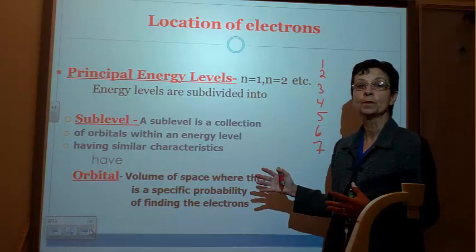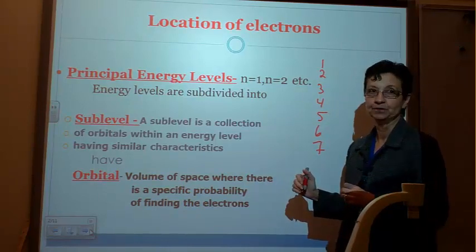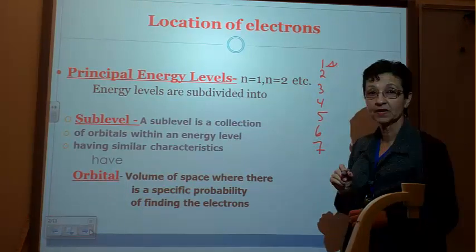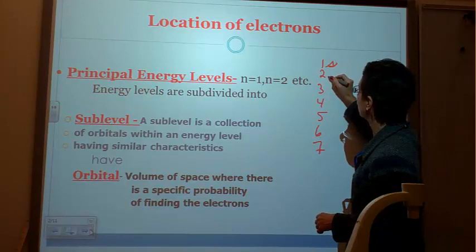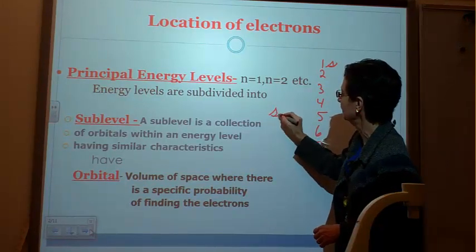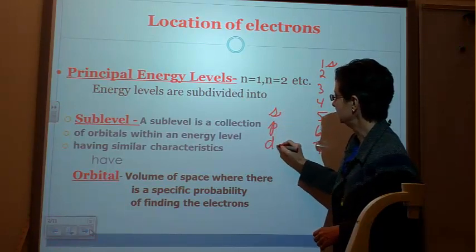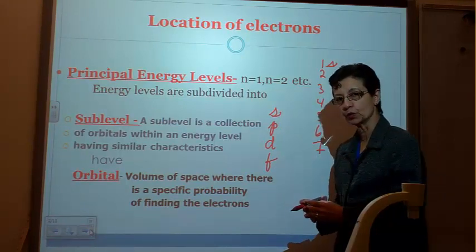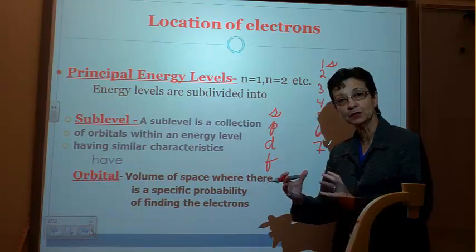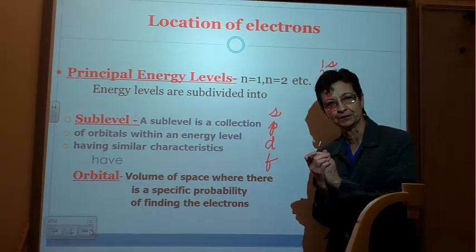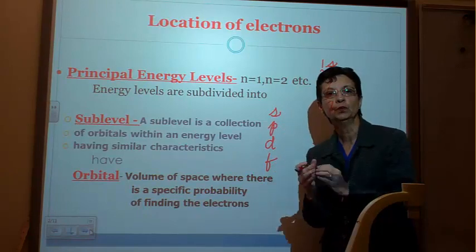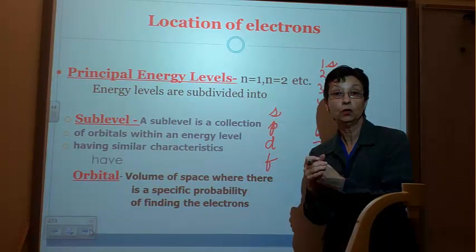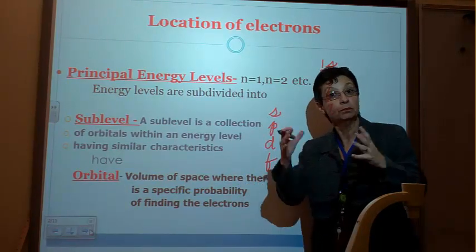The sublevel is a collection of orbitals within an energy level. There's a collection of orbitals called the S orbital, P orbital, D, and F. Then there are individual orbitals, and the individual orbital is that volume of space where two electrons can live. You can picture it like a room or a dorm where two people can live, or there could be one student or no students at all. That's possible too, but the room still exists.